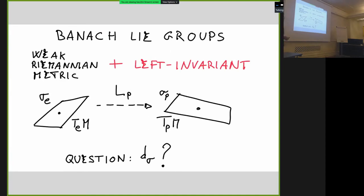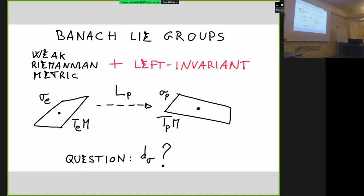Now let us consider a more specific situation: Banach Lie groups. We have proved that for general Banach manifolds the geodesic distance is not a distance. Let us consider the case of left-invariant weak Riemannian metrics. Such a metric is essentially defined by giving an inner product on the tangent space at the identity element of the group and then moving it to any other point using left translation. This is a very strong assumption because everything depends on what you assign at one point, and the group structure then determines the metric everywhere.